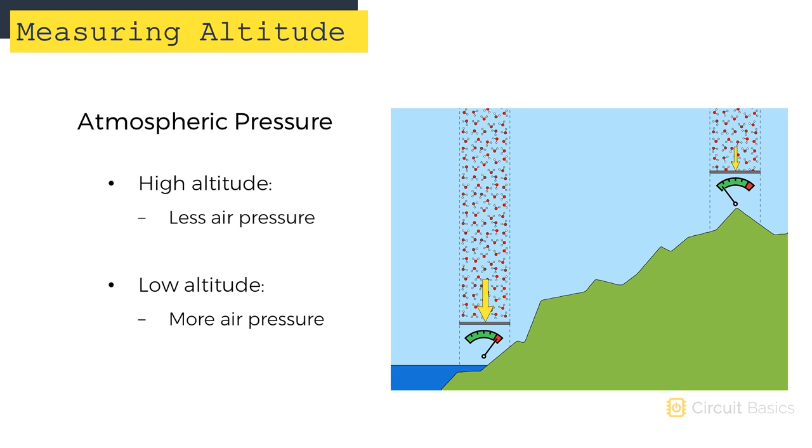Now imagine you're in an airplane, or at the top of a really high mountain. Now there's less air above you, and less air mass pressing down on you, so the atmospheric pressure would be less than one atmosphere.